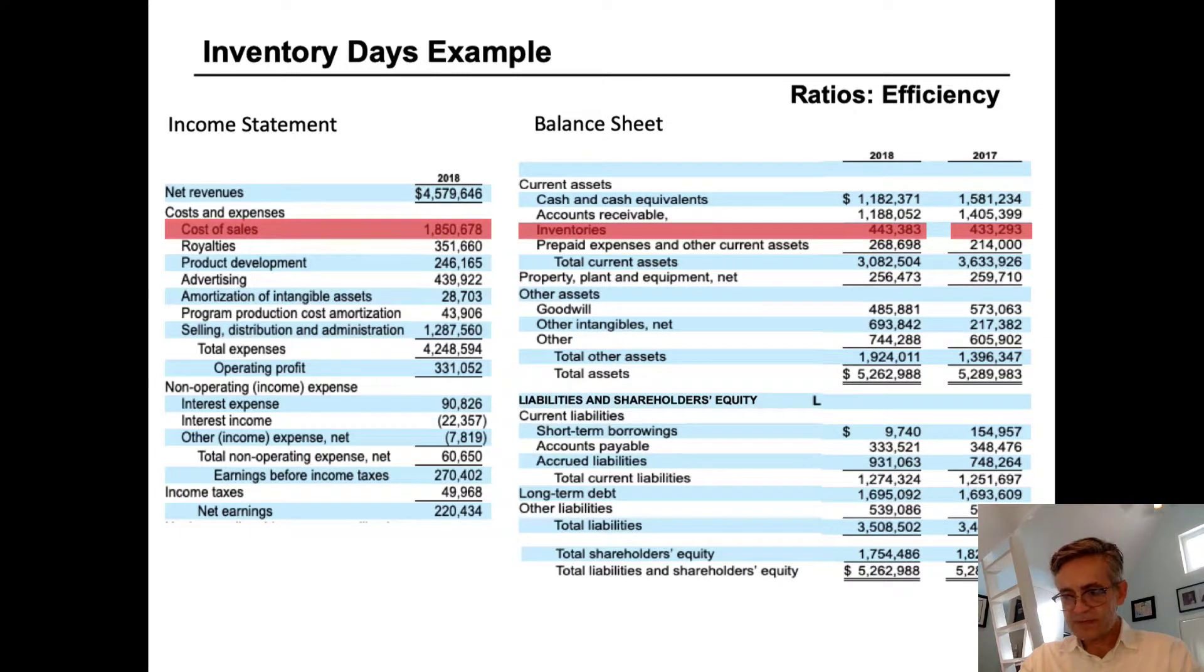And so we can see that inventory in 2017 was $433 million and inventory in 2018 was $443 million, or plus $10 million. And at the same time, cost of goods in 2018 was $1.85 billion.